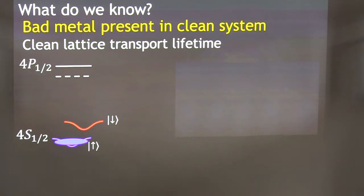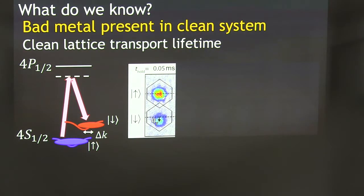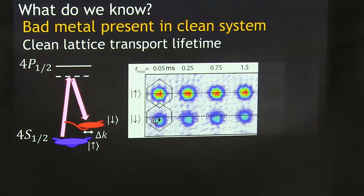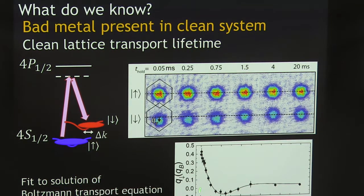We used a stimulated Raman transition to transfer some atoms to the other spin state but shifted in momentum. Here are pictures of what that looks like — here's the up-state centered at zero momentum; this is a crystal momentum distribution. The Brillouin zone shows up as a funny hexagon because of the imaging direction in our experiment. The down-state is shifted in momentum and has a net momentum. Then all we did was do this measurement, wait different amounts of time, and watch that net momentum decay. We can take those data and fit them to a solution of the Boltzmann transport equation, and that time is exactly what's known as the transport lifetime.